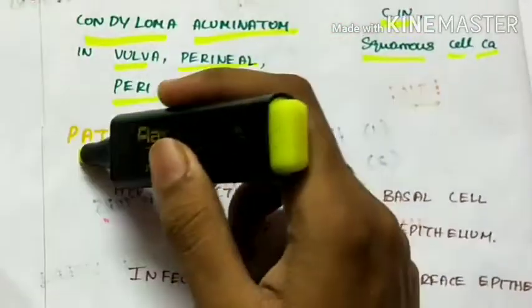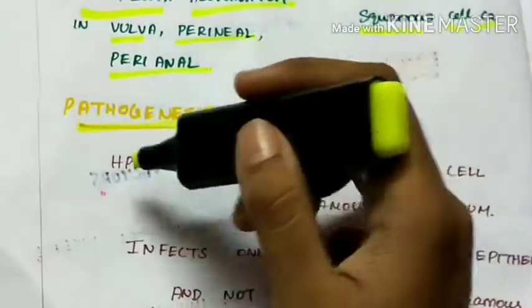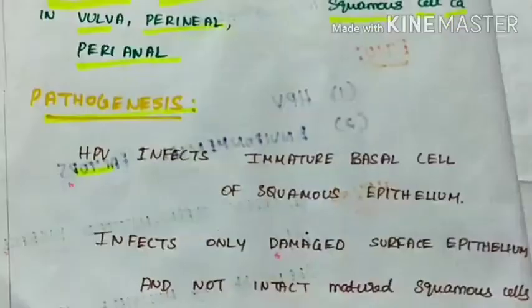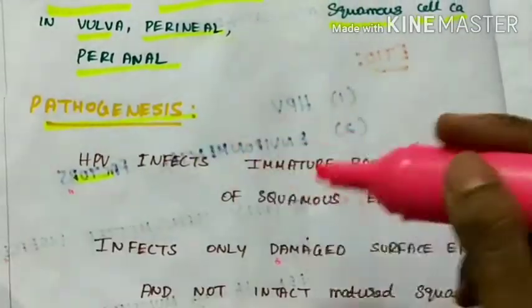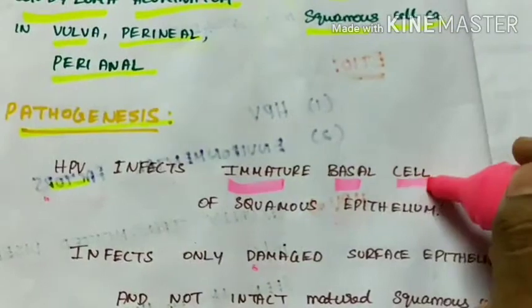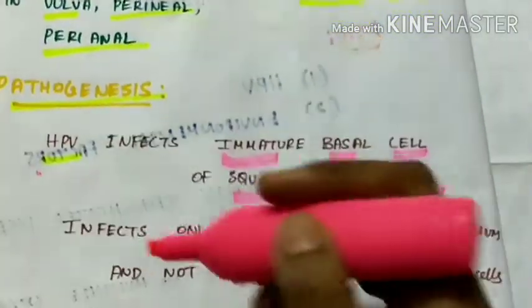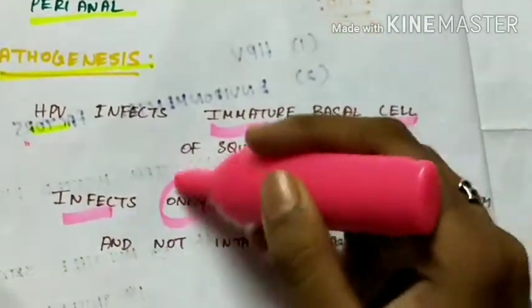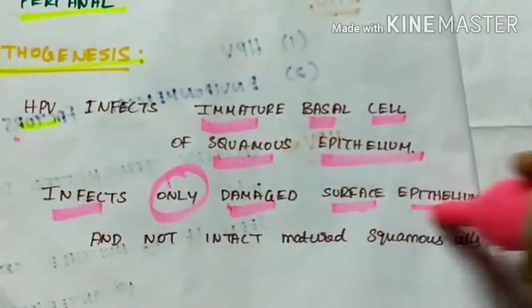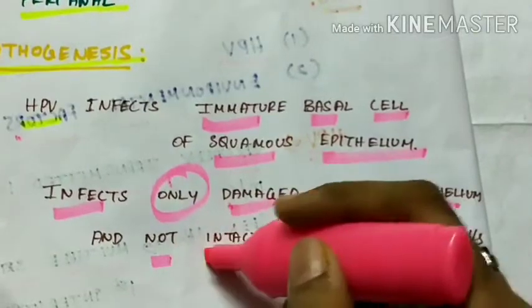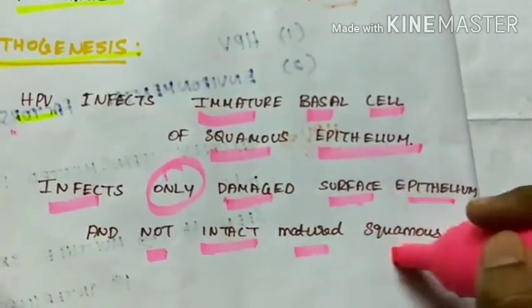Coming to the pathogenesis, the human papilloma virus infects the immature basal cells of the squamous epithelium present in the cervix, but it infects only the damaged surface epithelium and not intact matured squamous cells.